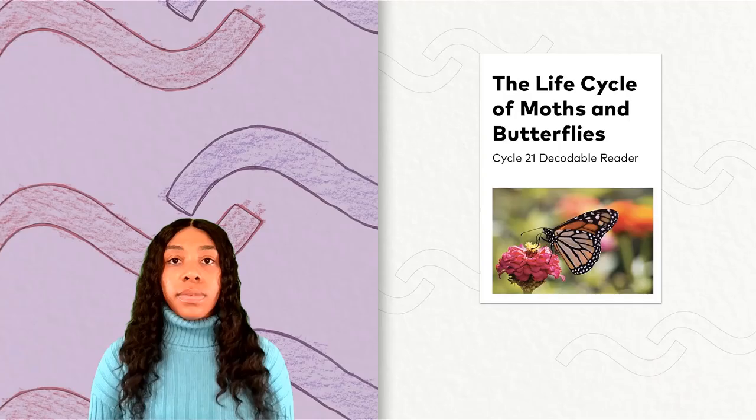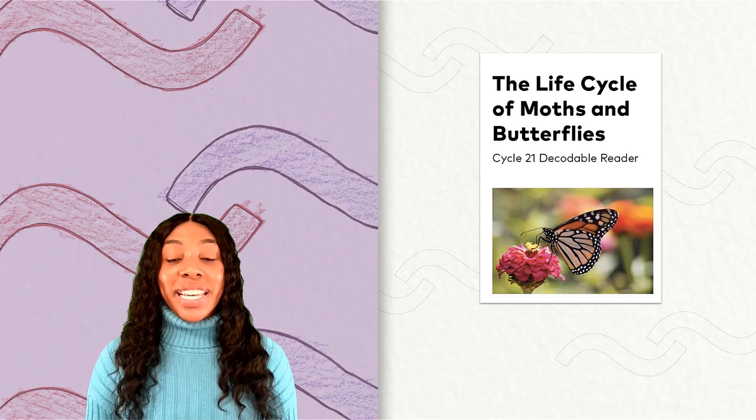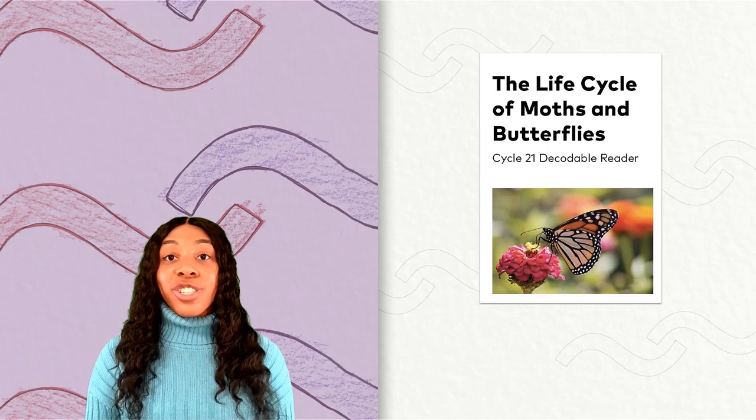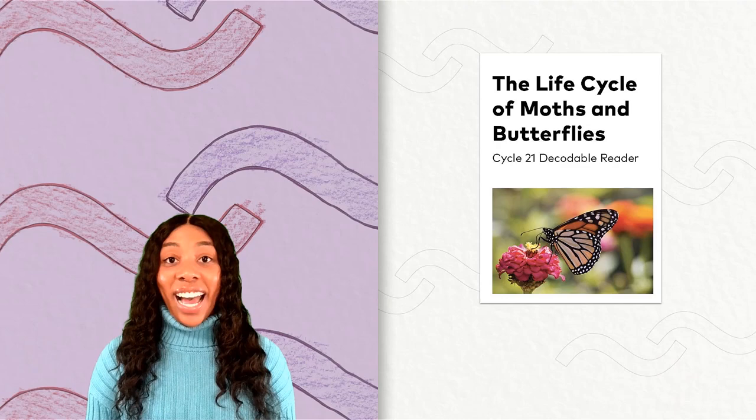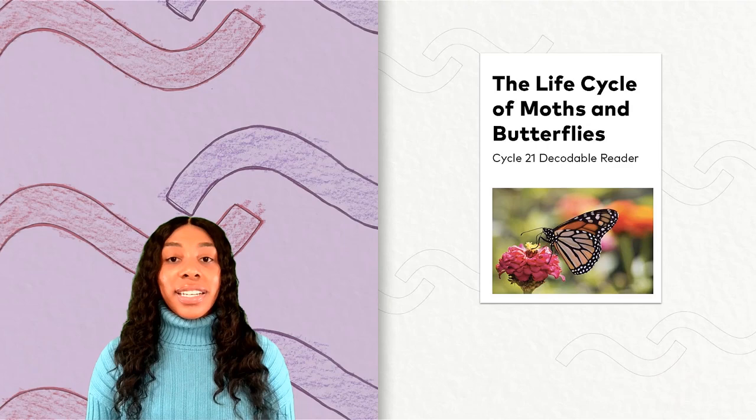Fluency. Now we will read our decodable reader for the week, the life cycle of moths and butterflies. Try to remember these high frequency words, and as we read together, jump up every time you hear one. The words are another, inside, isn't, pretty, process, similar, usually, and your. Watch for the blue underlines to let you know when to jump.